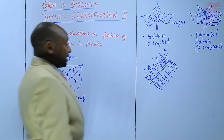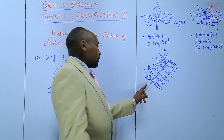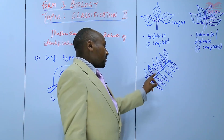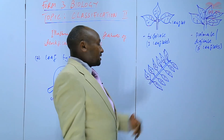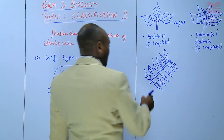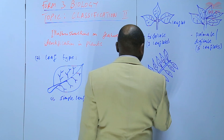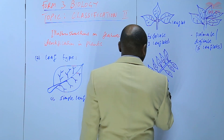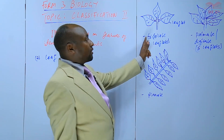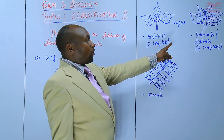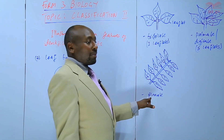Another type of compound leaf is whereby from the midrib we have a leaflet on either side. We refer to these as pinnate — compound pinnate. So all these include compound trifoliate, compound palmate, and compound pinnate.